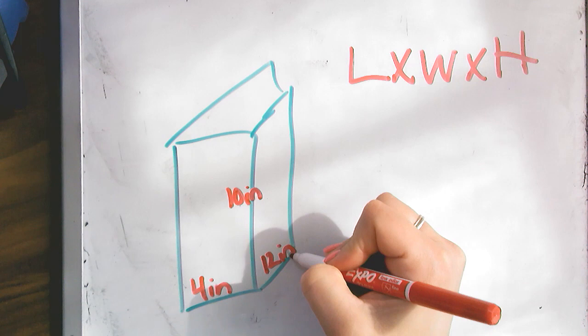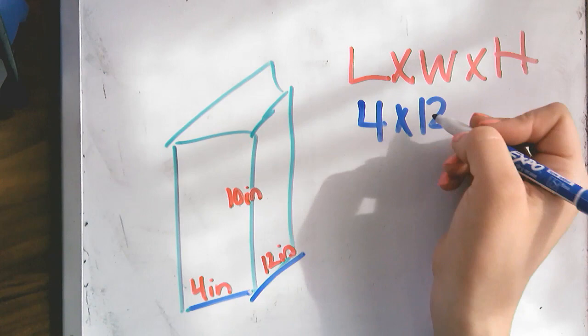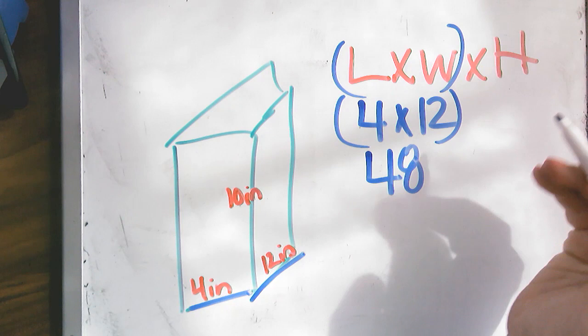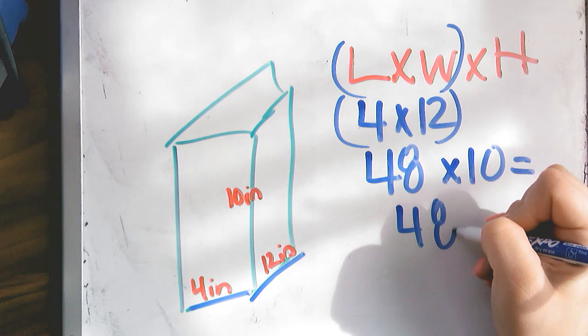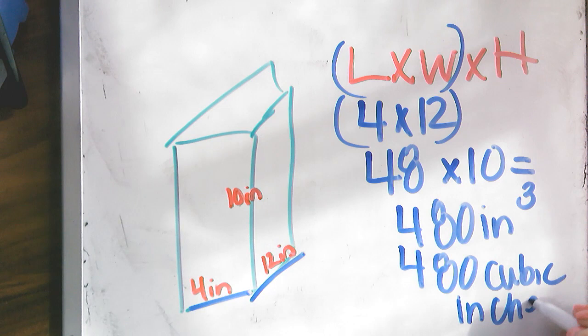So then we just put our numbers in. So 4 times 12, because 4 is my length and 12 is my width. And 4 times 12 is 48. So I did this piece first. And then I need to times that by 10. So 48 times 10 is 480. And then I need to put inches cubed, or you can put 480 cubic inches.